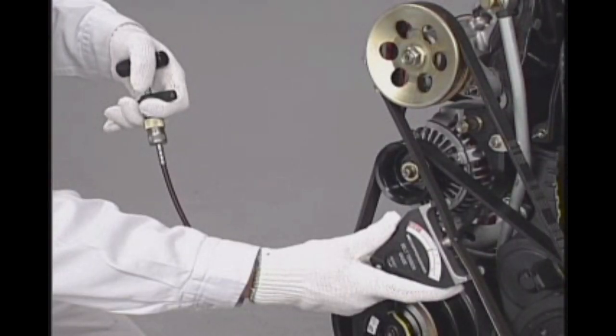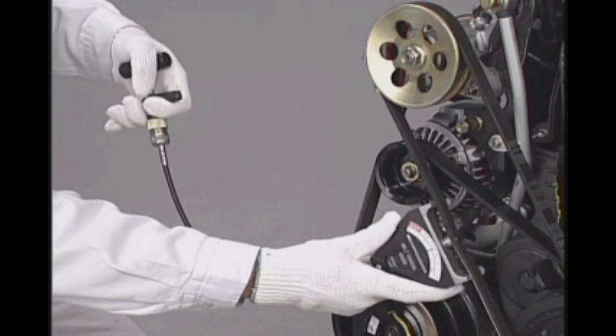To remove the gauge from the belt, grasp the handle firmly again.